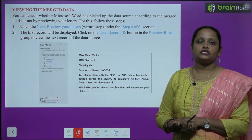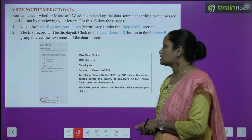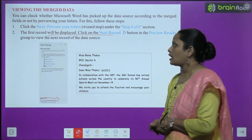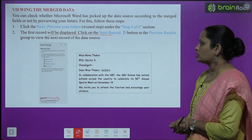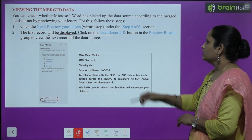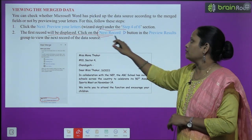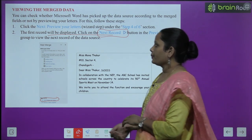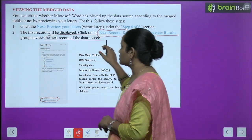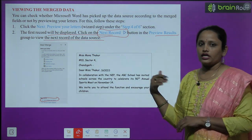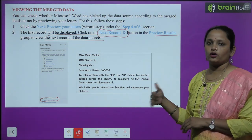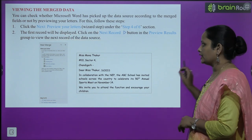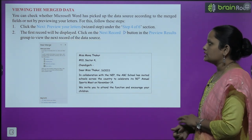The first record will display in front of you. Now click on Next Record — the Preview Results button in the group — to view the next record of the data source. All the records you created will appear one by one, and here you can see a sample.